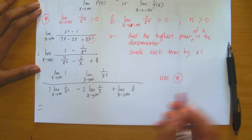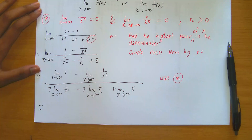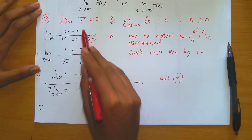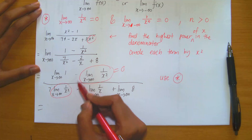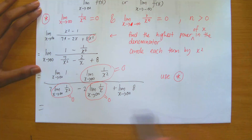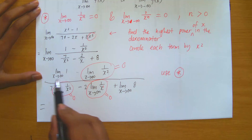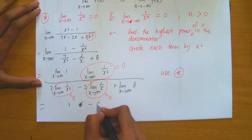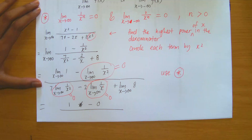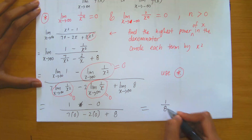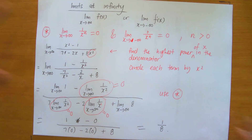Rule star tells us that whenever you have 1 divided by x raised to a power greater than 0, the limit at infinity equals 0. Here, 1/x² has n=2, so it's 0. The other 1/x² term is also 0. And 1/x has n=1, so that's also 0. The limit of a constant is just the constant itself. So we get 1 minus 0 in the numerator, divided by 7×0 minus 2×0 plus 8 in the denominator, giving a final answer of 1/8.